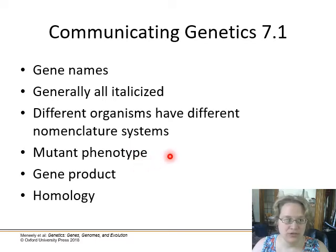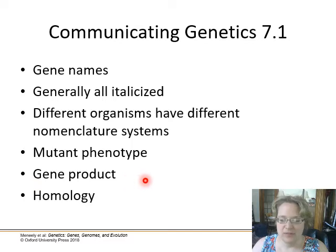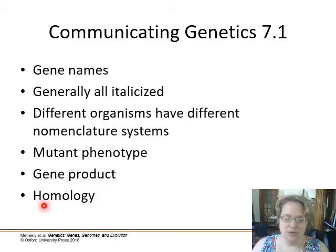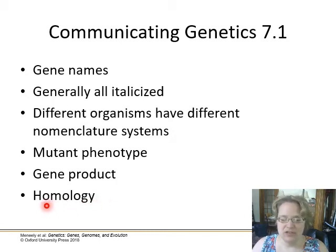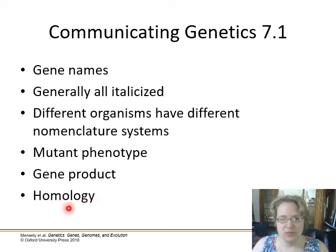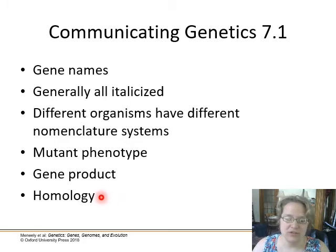The three main ways genes get named: first, the mutant phenotype — for example, when a gene was broken and the fly displayed white eyes instead of the normal red, the gene was called 'white.' Second, for metabolic genes, you name the gene after the enzyme or gene product it makes. Third, homology — if you find a gene in chimpanzees related to one in gorillas, you might name it something like 'gorilla amylase 2' to reflect that relationship across species.